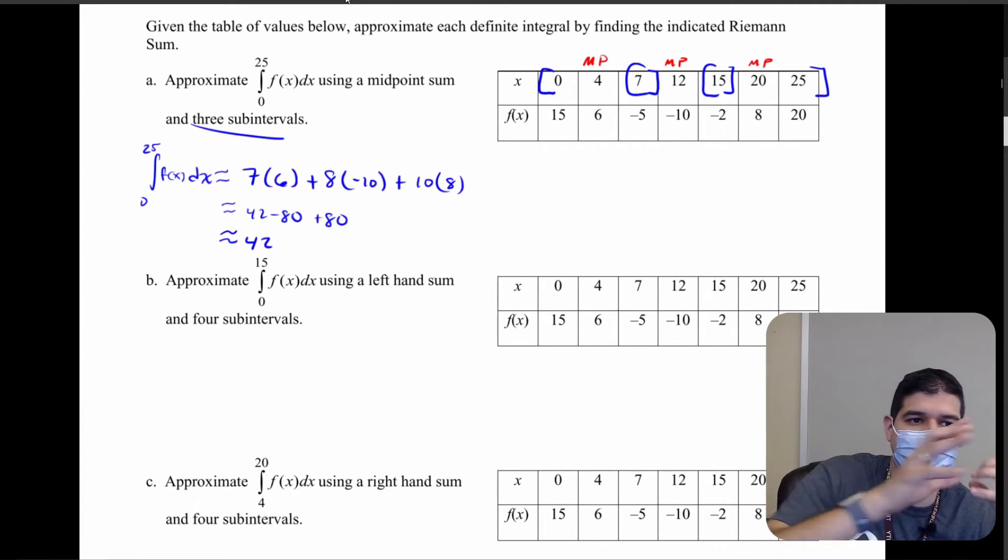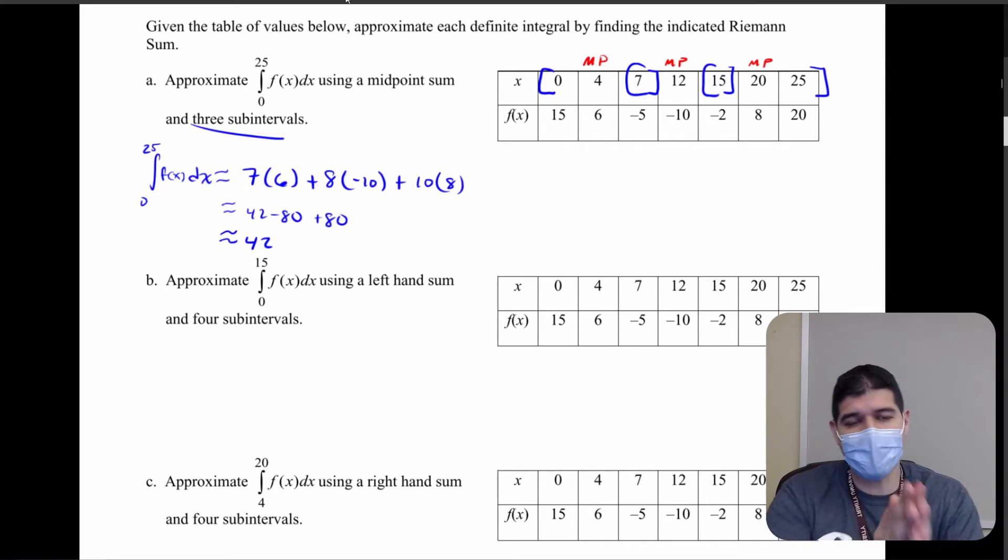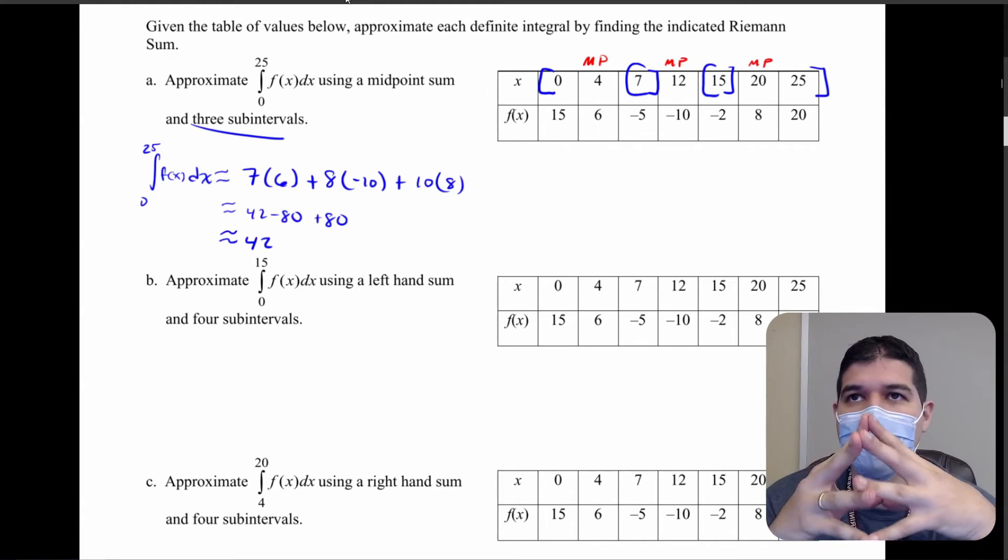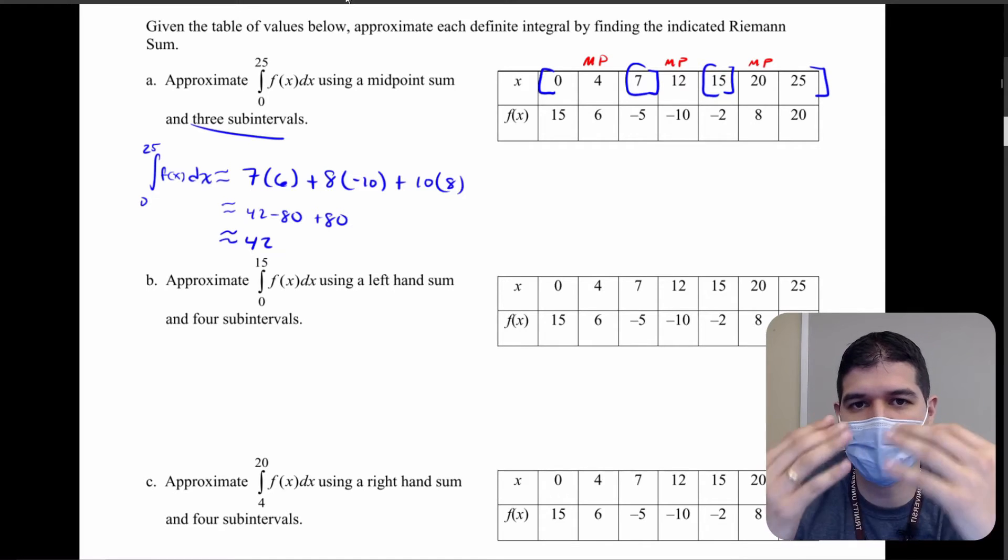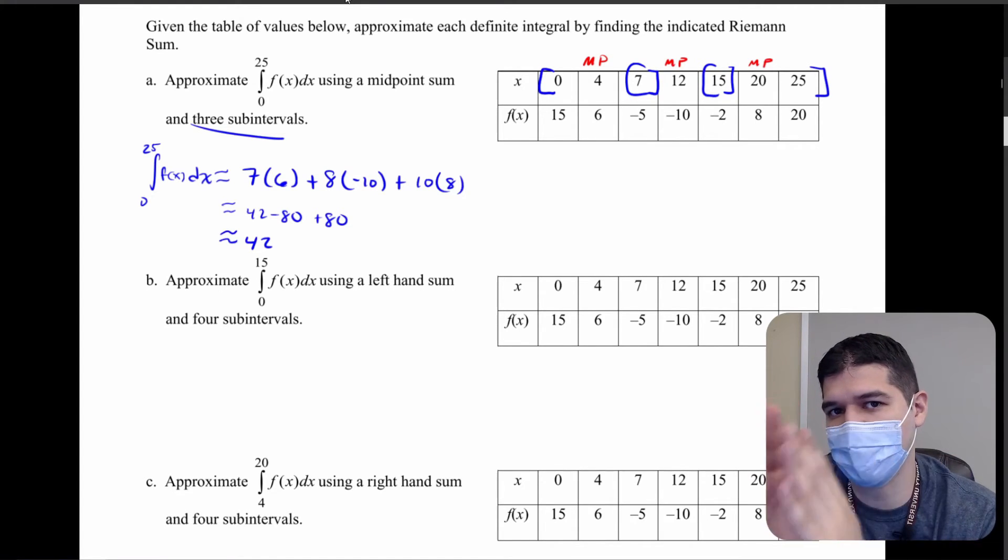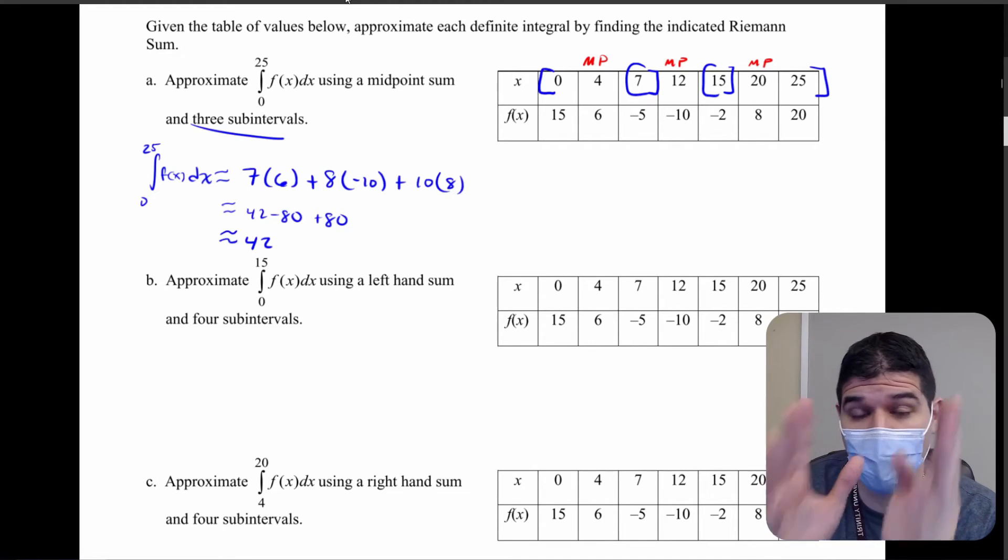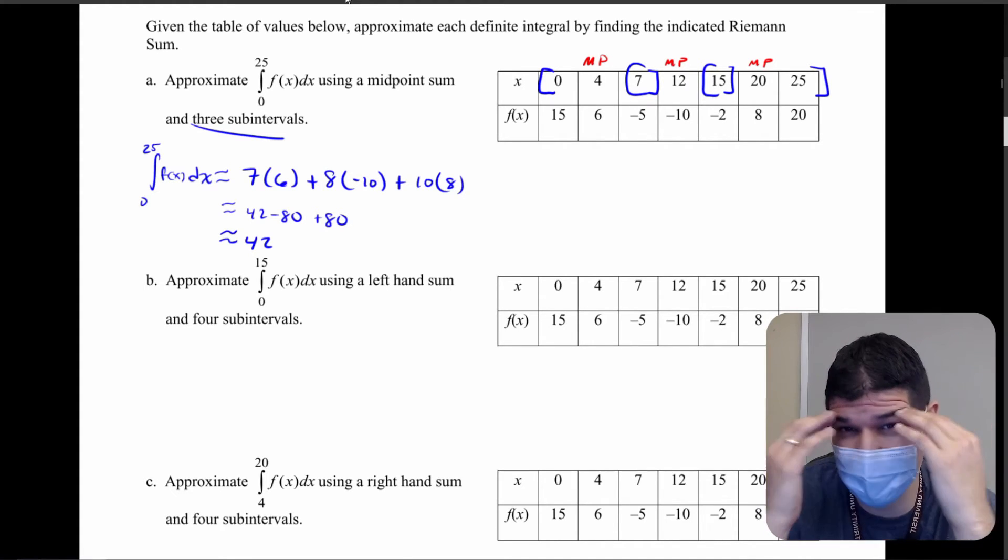So that's how we can use tables now. And what you want to keep in mind is when we're doing our intervals before when we had a graph and we had a function we were able to get exact values and have very clean intervals. That's not going to be the case when we're working with tables. So just keep that in mind.